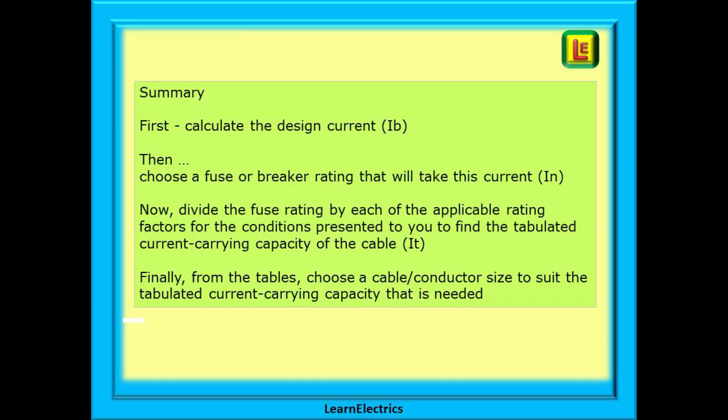In summary then, first calculate the design current, IB. Then choose a fuse or breaker rating that will take this value of current, IN. Now, divide the fuse rating by each of the applicable rating factors for the conditions presented to you and you will find the tabulated current carrying capacity, IT. Finally, from the tables, choose a cable or conductor size to suit the tabulated current carrying capacity that is needed. And that is it.